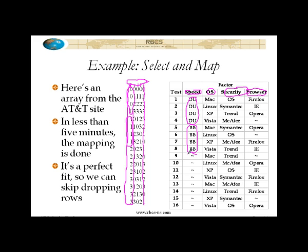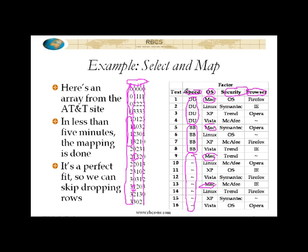Two and three correspond to no particular option, so I replace those with a tilde, which indicates tester's choice — do what you want. Now the next column, I've got a one here, so the one, that's a MAC. And it's just a matter of simply going through, search and replace, like I said, and when you're done you've got this nice-looking orthogonal array. By the way, I misspoke — the zeros got replaced by MAC, not ones. The zeros are the MACs. Simple search and replace, and I end up with this nice-looking orthogonal array.